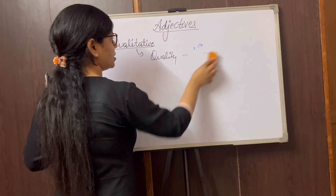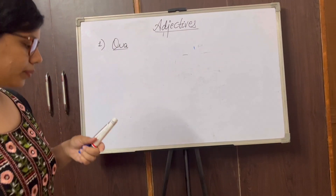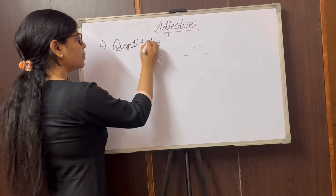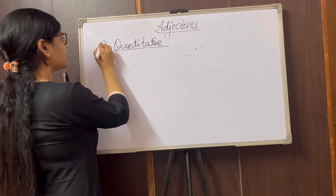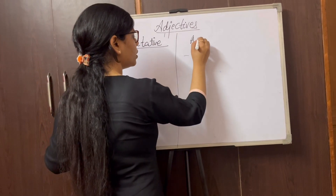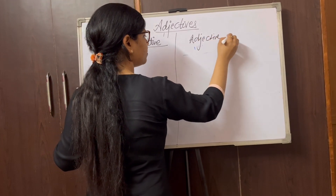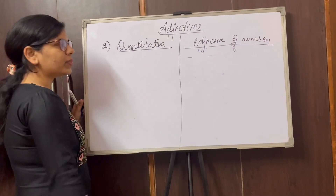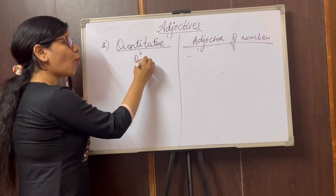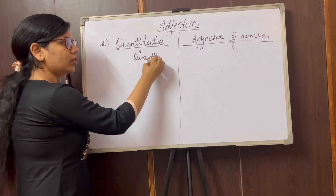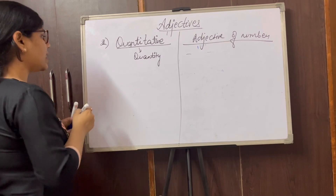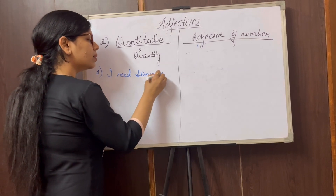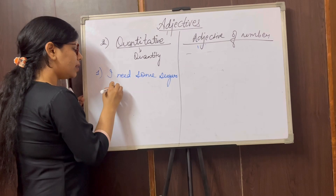Now let's move on to the other types of adjectives: quantitative adjectives and adjectives of number. Quantitative means quantity or amount. For example, let's take the sentence: I need some sugar in my coffee.